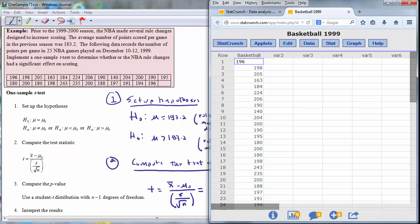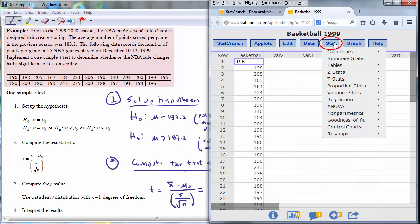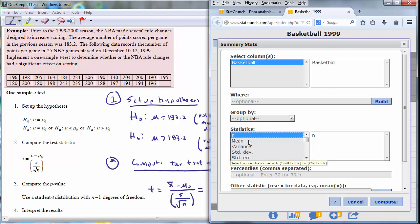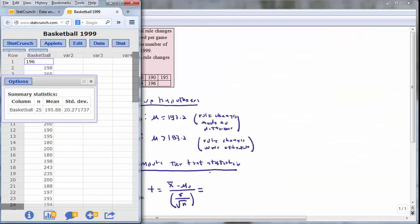So open up StatCrunch, open up the Basketball 1999 scores, go to Stat, Summary Stat, Columns. Select the Basketball column by clicking on it, and then select the statistics we want to compute, in this case the sample size, hold down the control button, the sample mean, and the sample standard deviation. Press Compute, and now we can use these numbers in our test statistic calculation.